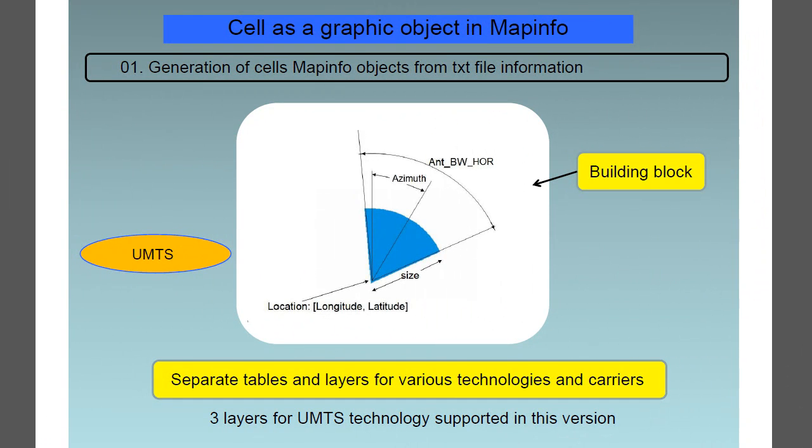Starting with feature number 1, this is the generation of cells MapInfo objects from the text file information. This particular version supports three layers for UMTS technology.